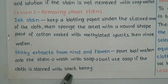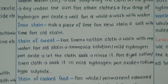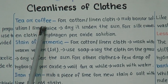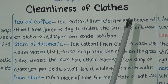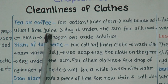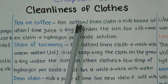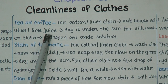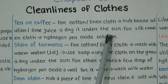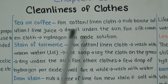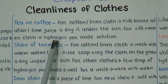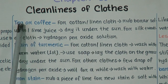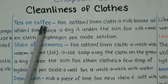For tea or coffee stains on cotton or linen cloth: rub borax, salicylic acid, or lime juice, then dry under the sun. For silk or woolen cloth: use hydrogen peroxide solution. By using these methods, you can remove stains of tea or coffee from your cloths.